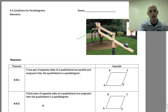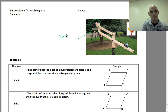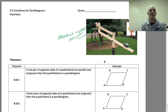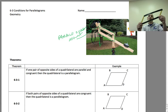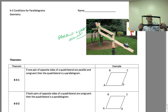Up here at the top, birdwatching can involve many different apparatus. These are binoculars, and this is called a parallelogram mount. What it allows the viewer to do is to move up and down and not change the viewing angle. You can see the parallelogram outlined inside, and it maintains its parallelogram nature as it moves up and down.